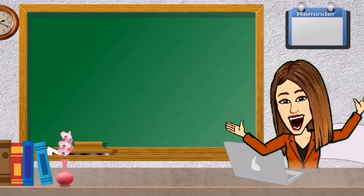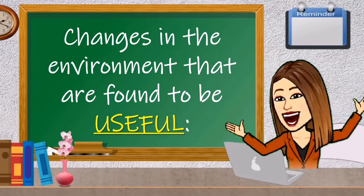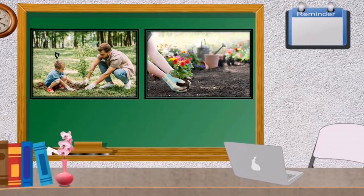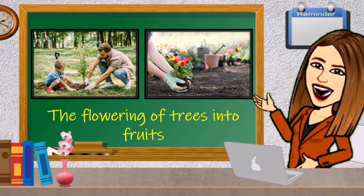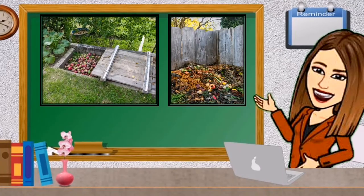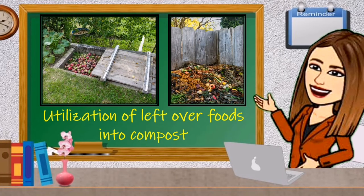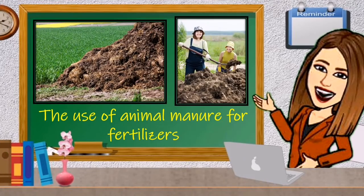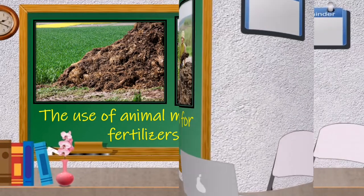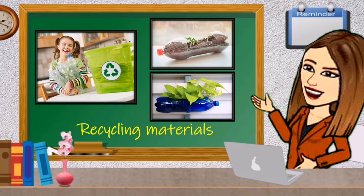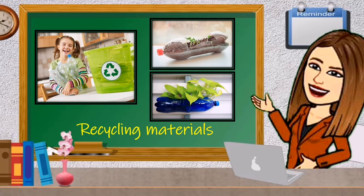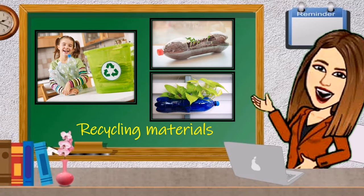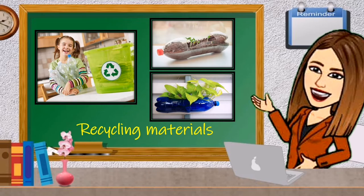However, there are changes in the environment that are found to be useful: the flowering of trees into fruits, utilization of leftover foods into compost, the use of animal manure for fertilizers. Recycling materials are helpful to keep the environment clean and more adaptable for humans, plants, and animals to live. This will lead to activities in food production and maintenance of a clean and green environment.